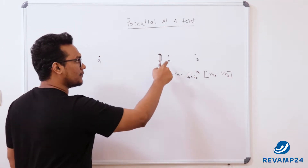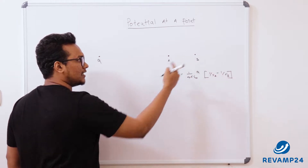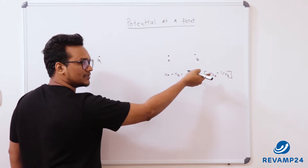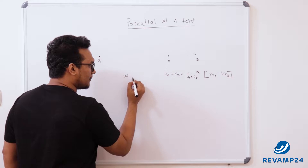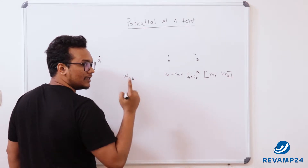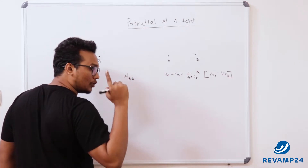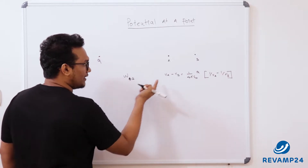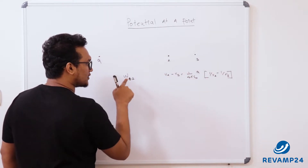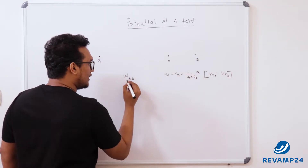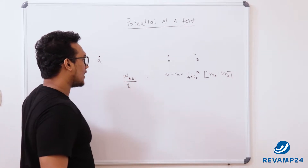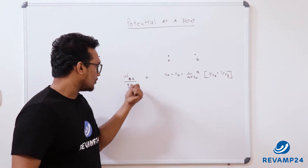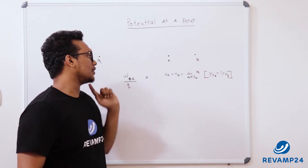What do I mean by potential difference? Potential difference is nothing but the work done in bringing a unit charge from b to a. So for charge q, find the work done from b to a and divide it by q — we get the work done to bring a unit charge from b to a.